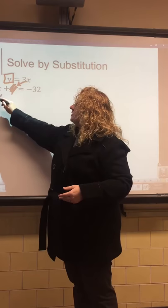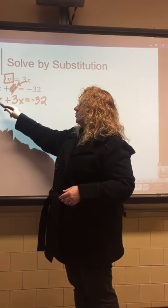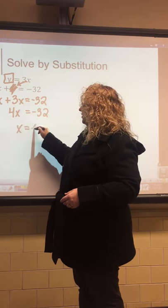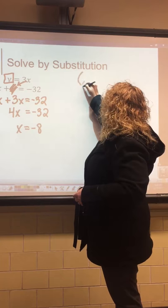We're going to plug 3x in place of y, because if y equals 3x then we can replace y with what it equals. So we rewrite this as x plus 3x equals negative 32. Then it's just an easy equation — combine like terms: 1x plus 3x is 4x, then divide by 4 on both sides. I'll jump down to the answer: x equals negative 8.